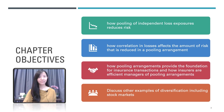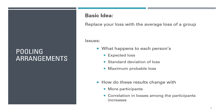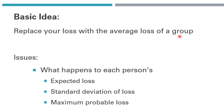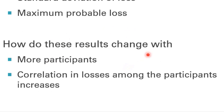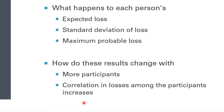As mentioned earlier, pooling arrangement is one of the basic characteristics of insurance. The basic idea is to replace your loss with the average loss of a group. The main issues we will examine in this chapter are the impact of pooling arrangement on expected losses, standard deviation of loss, and maximum probable loss — and how these results change as more participants join and as correlation in losses among participants increases.